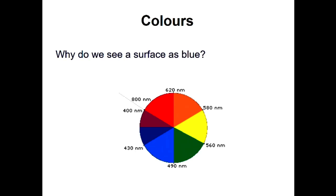Why do we see a surface as blue? Here's my nice blue tray. A lady answered correctly: it absorbs every other colour and reflects the blue back. All the other colours of light fall on it, they're absorbed — taken into the material — and blue light is reflected back to your eye, so it appears blue. Similarly, a red top on this bottle is only reflecting red light; it's absorbing the other colours.